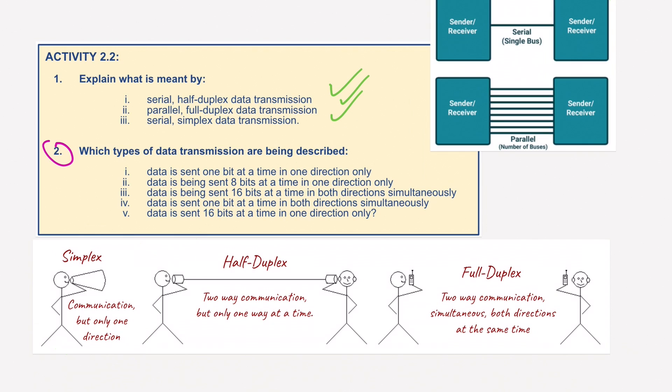And now we move on to question two. So for the first one, data is sent one bit at a time in one direction. Well, that must be serial, so number one, serial, and it's in one direction only, so it must be simplex. Serial and simplex.